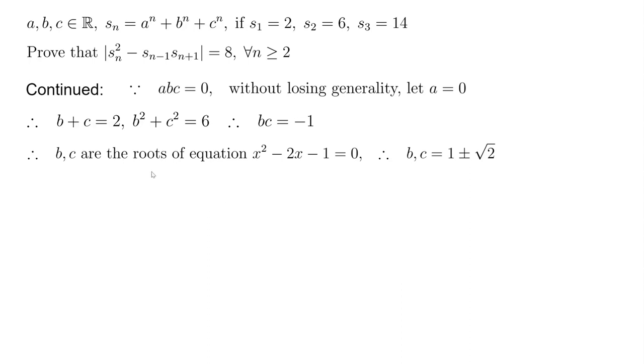So b, c actually are the roots of this equation: x^2 - 2x - 1 equals 0. Solve it. You can use the formula or you can just move minus 1 to the right hand side and plus 1 both sides. You got (x - 1)^2 equals 2. So b, c just equal to 1 plus or minus square root of 2.